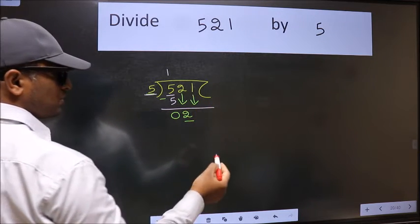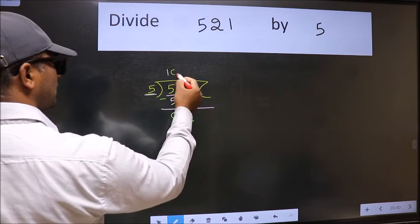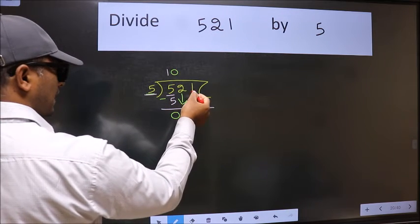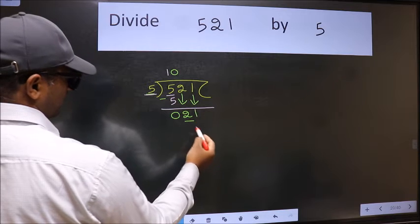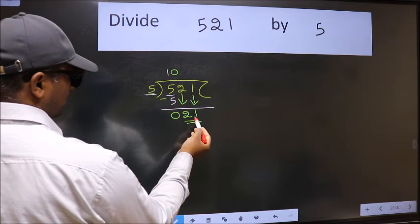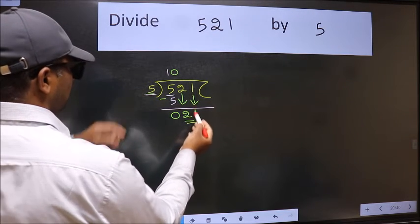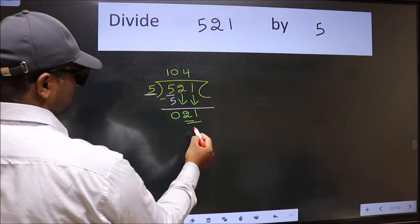And the rule to bring down the second number is we should put 0 here. Then only we can bring this number down. Now 21. A number close to 21 in the 5 table is 5 fours 20.